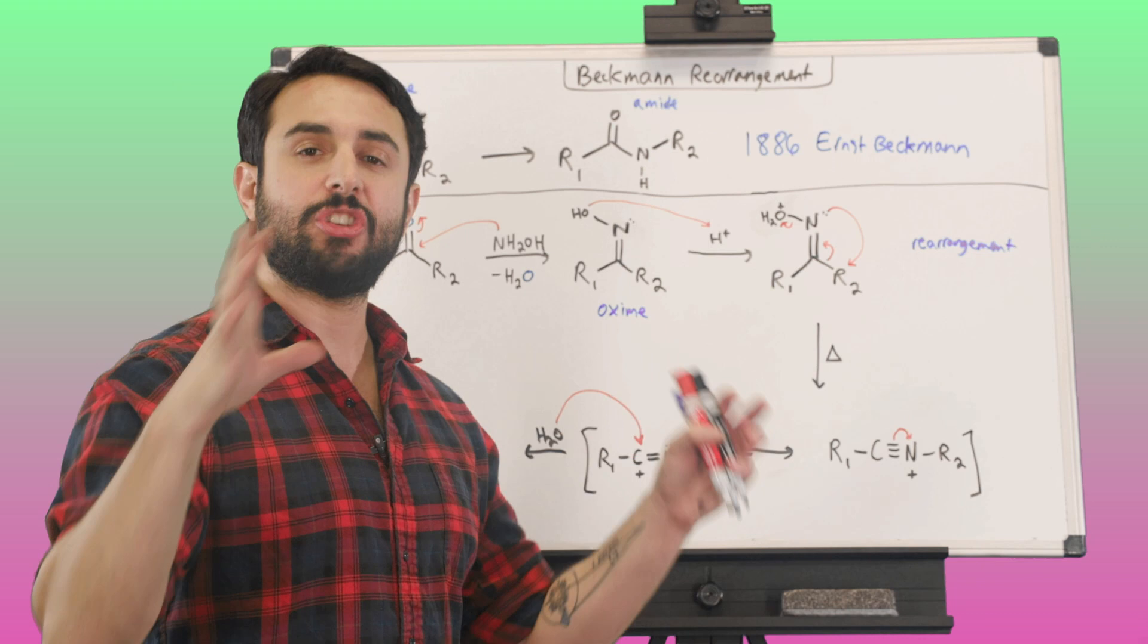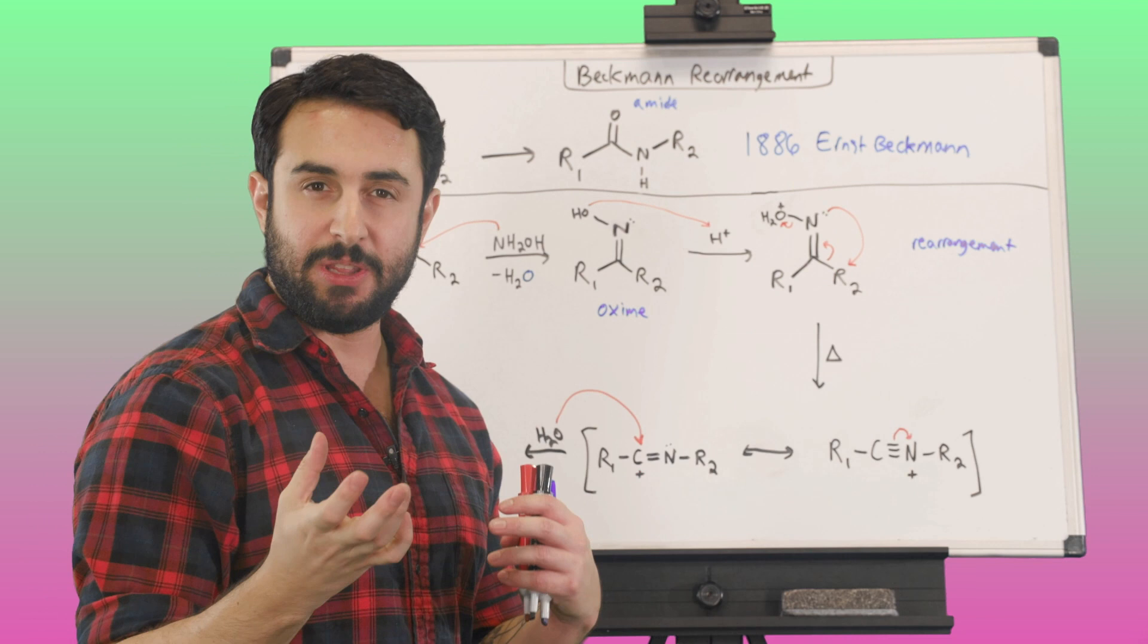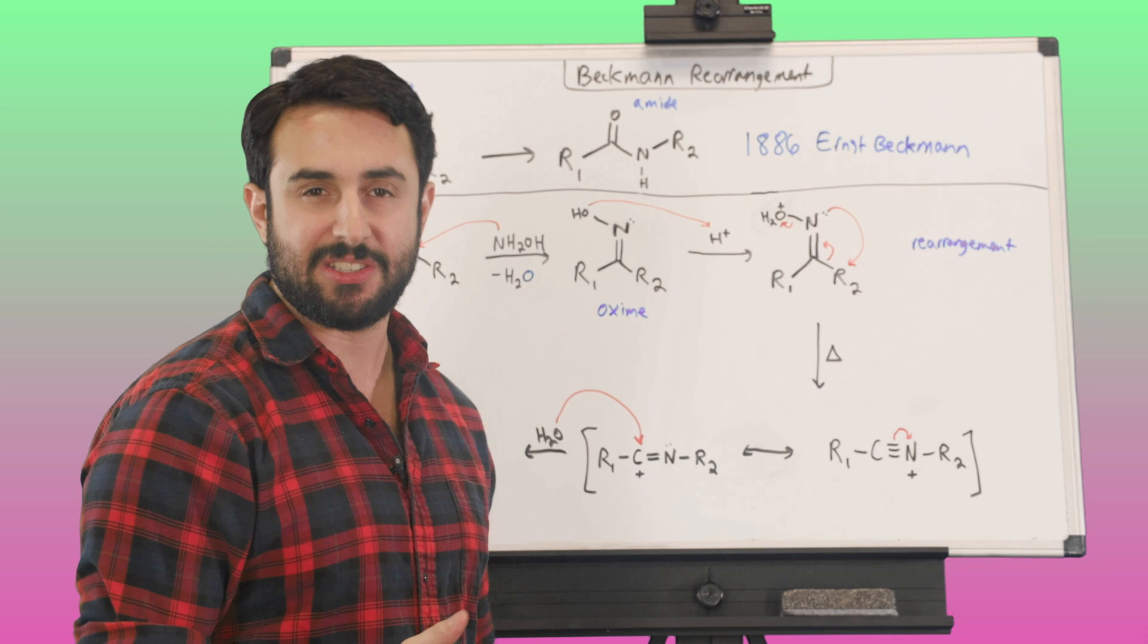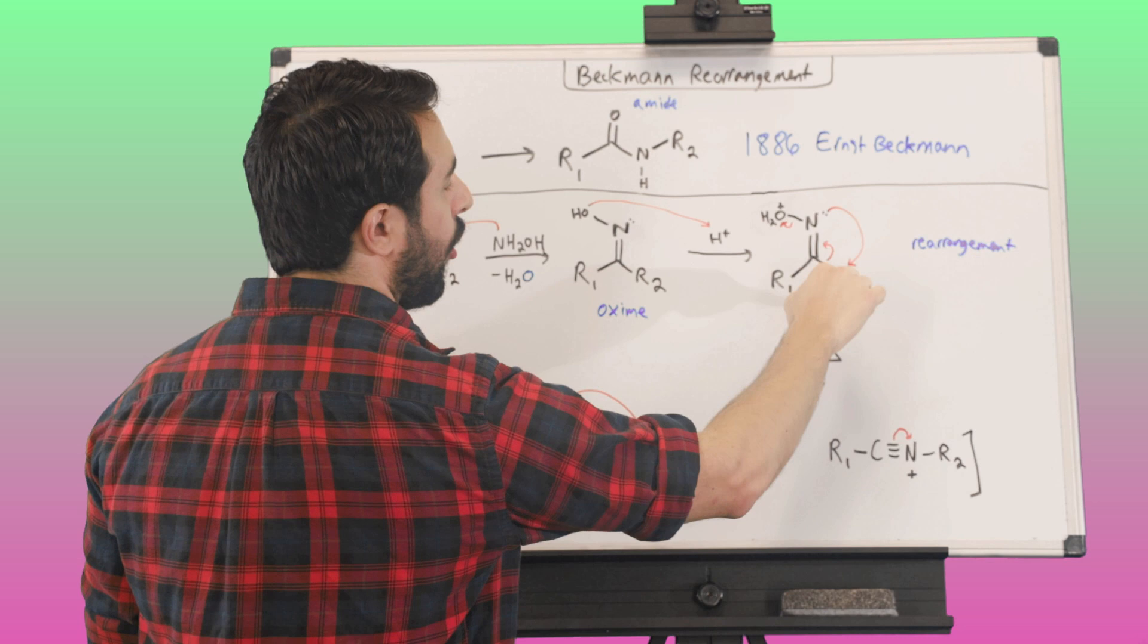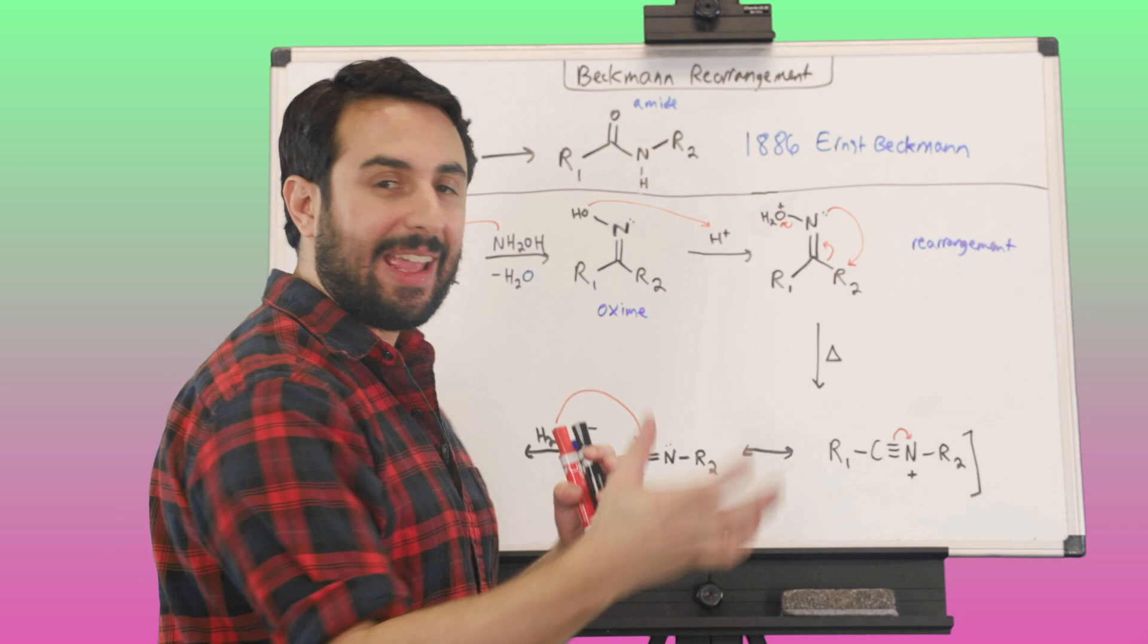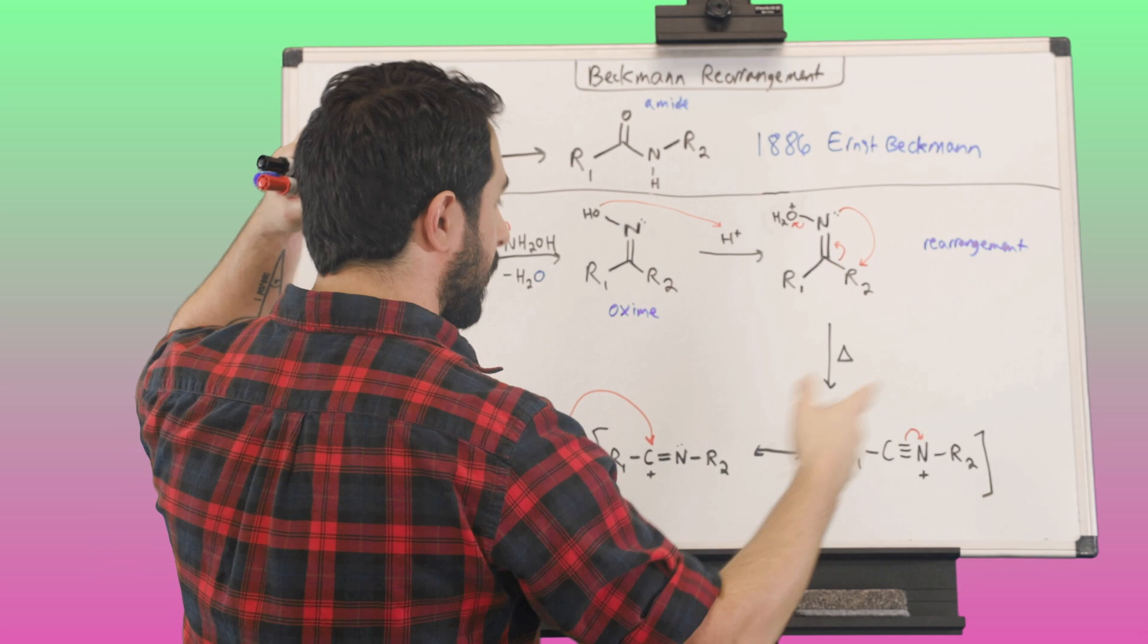Therefore, the more substituted R group or the carbon that is more substituted connected to this carbon is going to be the one that's a little bit more favorable to be transferred. Now, there are many examples, and we could look at product distributions, but to just say that in a very basic way, that the group, let's say that this was a more branched group than this one, that is what would make that more favorable to be transferred, but we can have a product mixture with each group migrating in different circumstances.